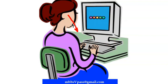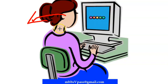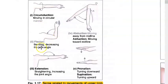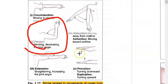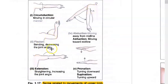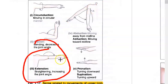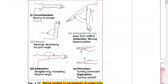When you bend the head back, the angle between you and that part of the body increases — that is extension. In the diagrams, flexion shows the part brought toward the body with a decreased angle, and extension shows an increased angle.